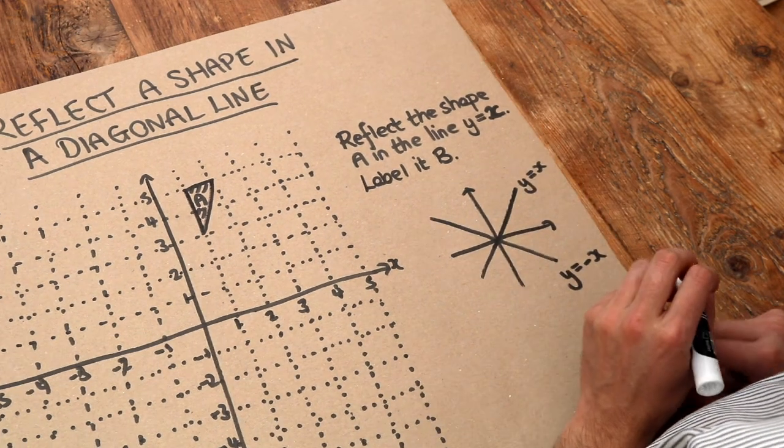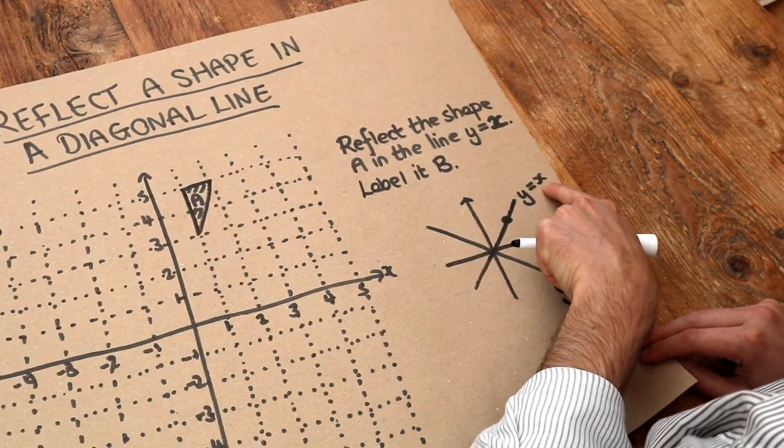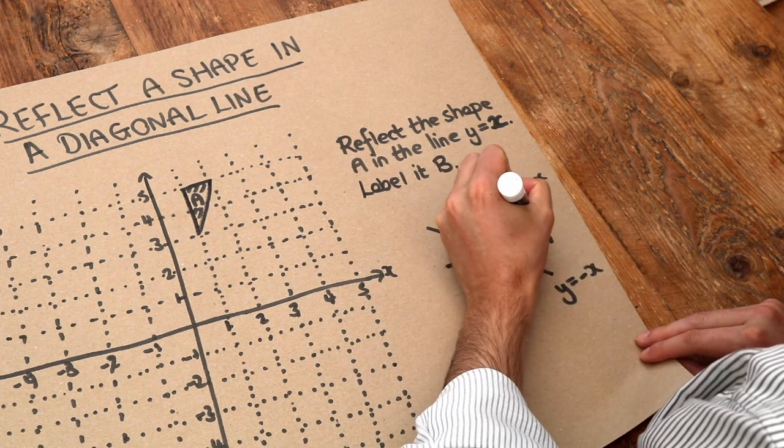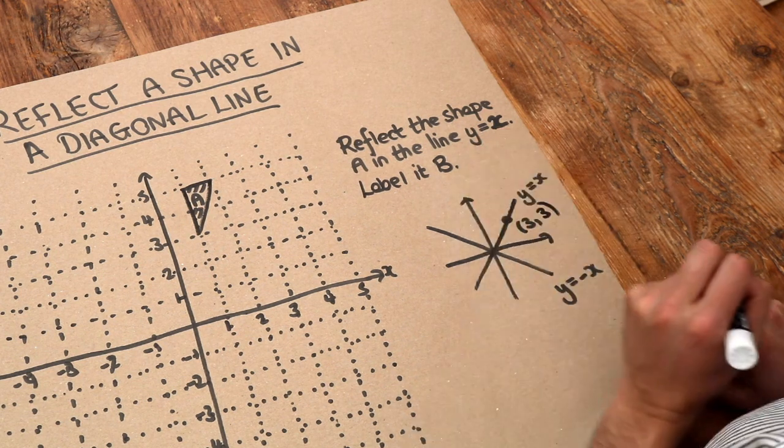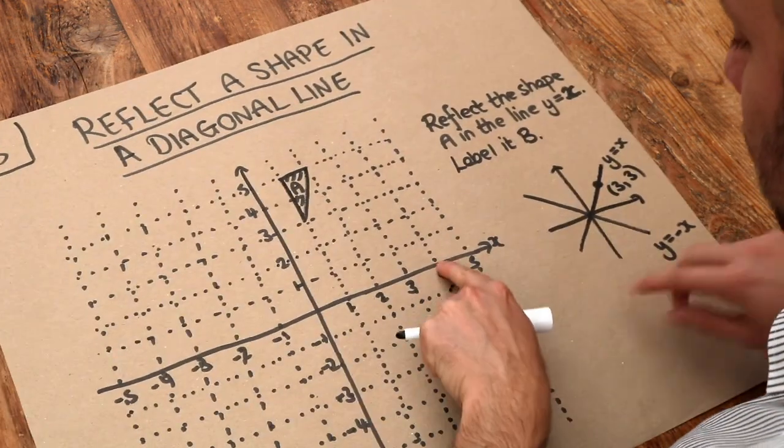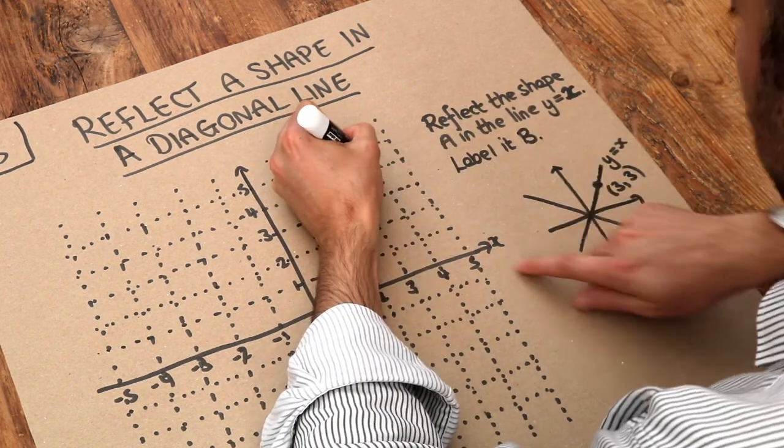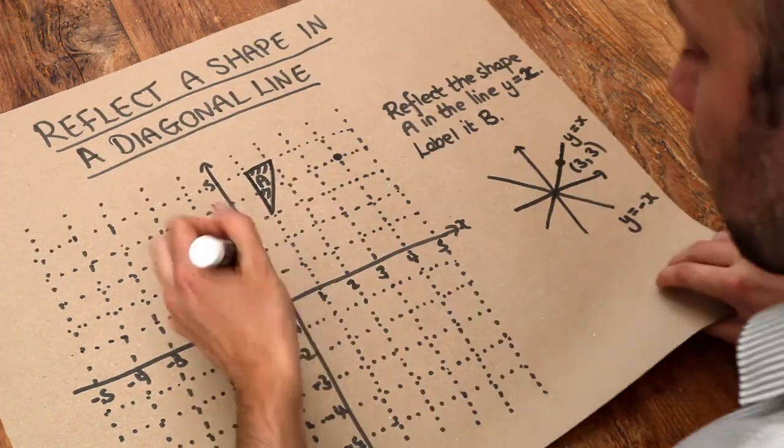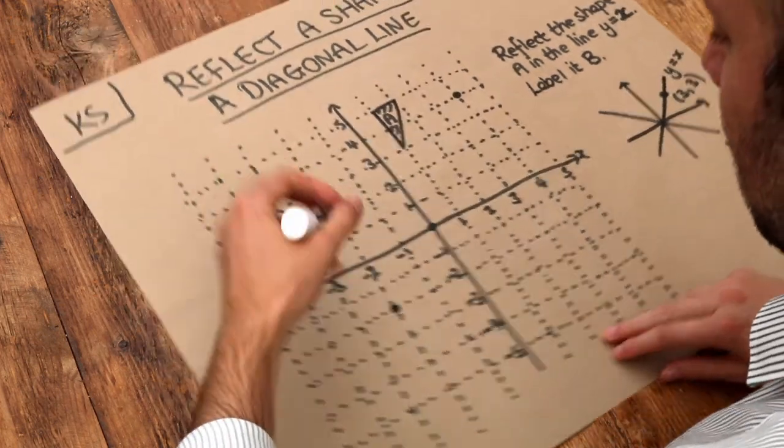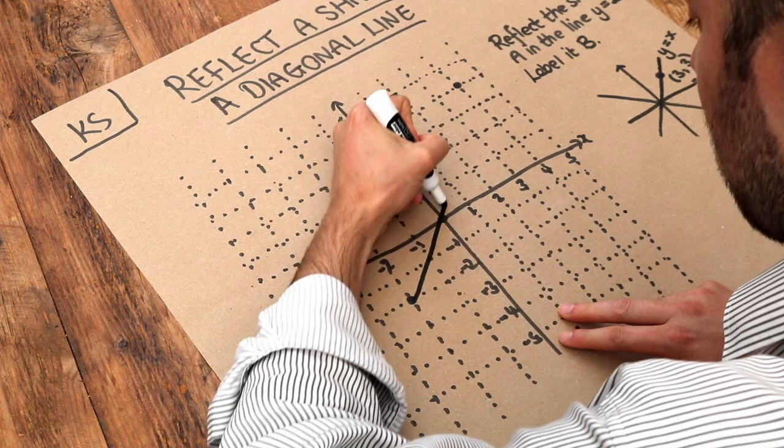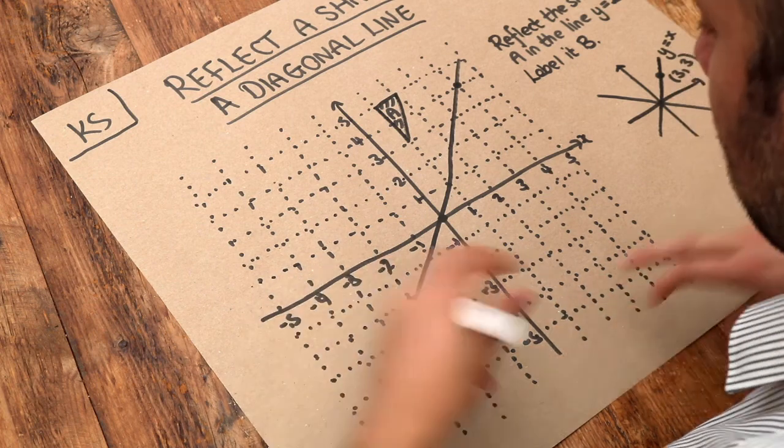The reason this works is because if you were to pick any point on this line, the y value has got to be the same as the x value. For example, if the x value was 3, the y value would also have to be 3. If x was 0, y has to be 0. If x equals minus 2, y has to be minus 2. And then we can just join these together. So if we draw this line of reflection we now have our line of reflection.